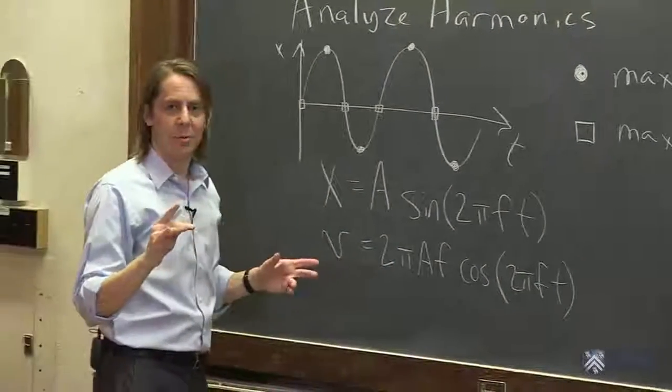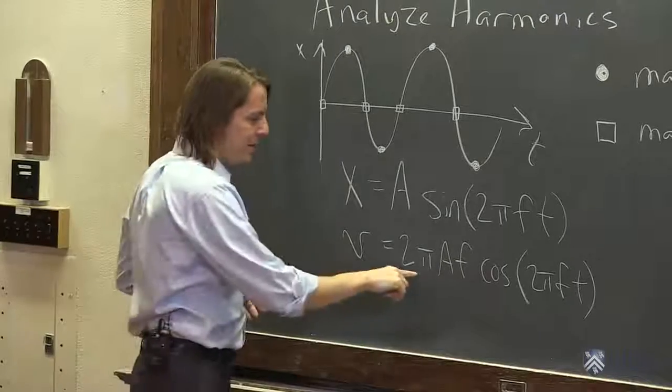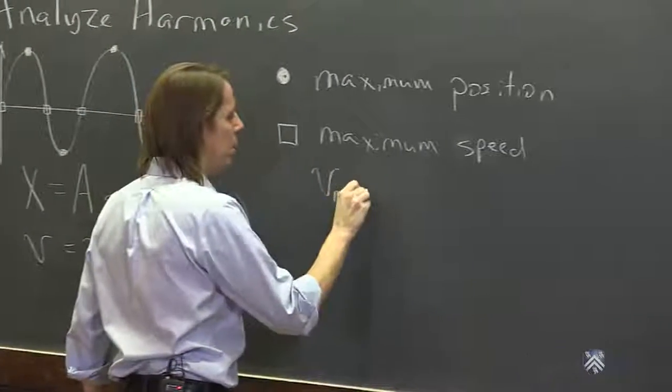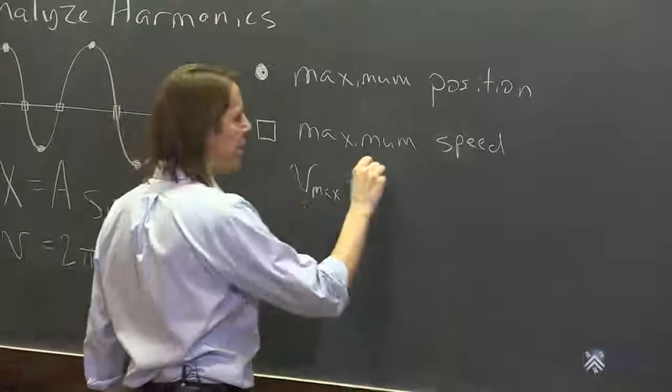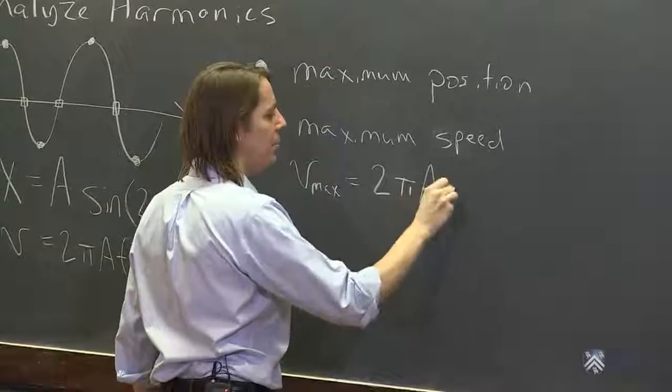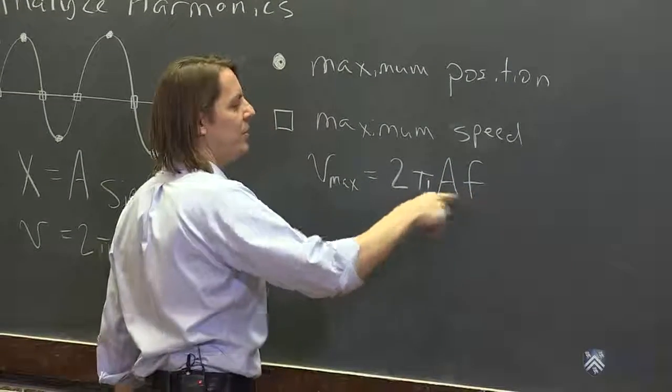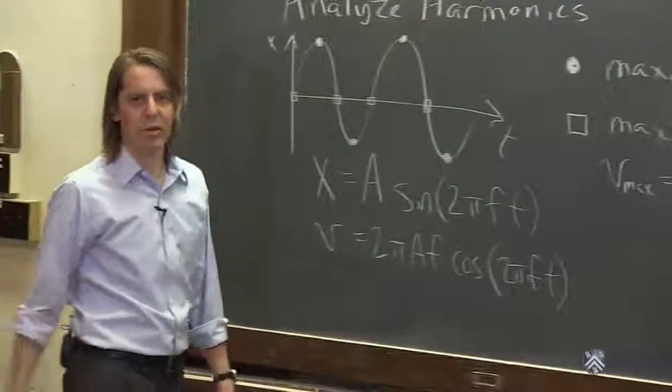The maximum speed is v_max = 2πAf, the amplitude times the frequency. So you got meters here, you got hertz, which is 1 over seconds, so you get meters per second.